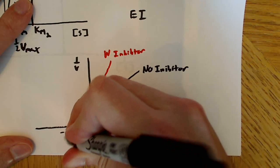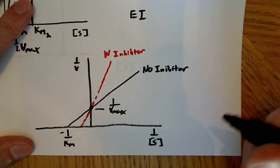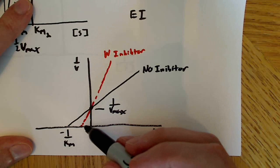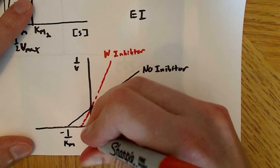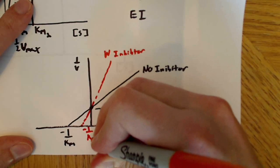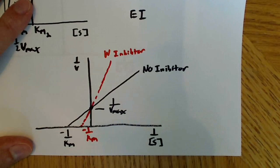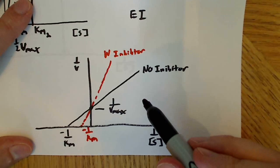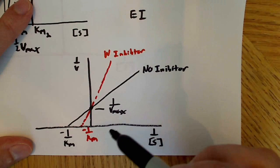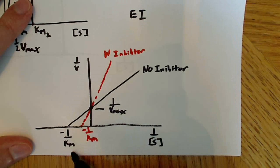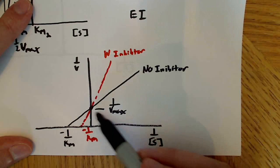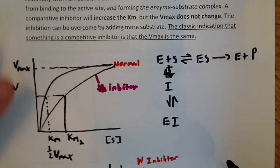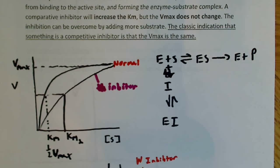On the Lineweaver-Burk plot, the X-intercept corresponds to negative 1/Km. With competitive inhibition, the X-intercept shifts — becoming less negative — reflecting the increased Km. The Y-intercept for 1/Vmax stays the same for both lines. Understanding where to find Km and Vmax on this plot, and how to distinguish the inhibited from uninhibited curves, is important testing material.